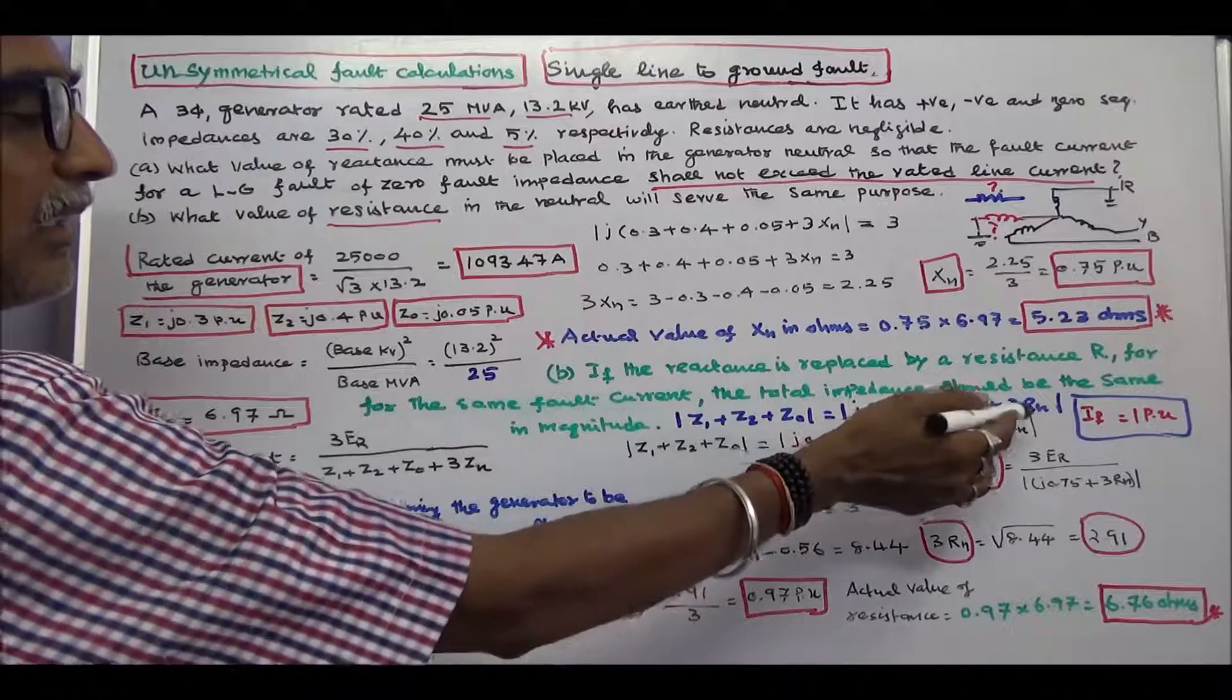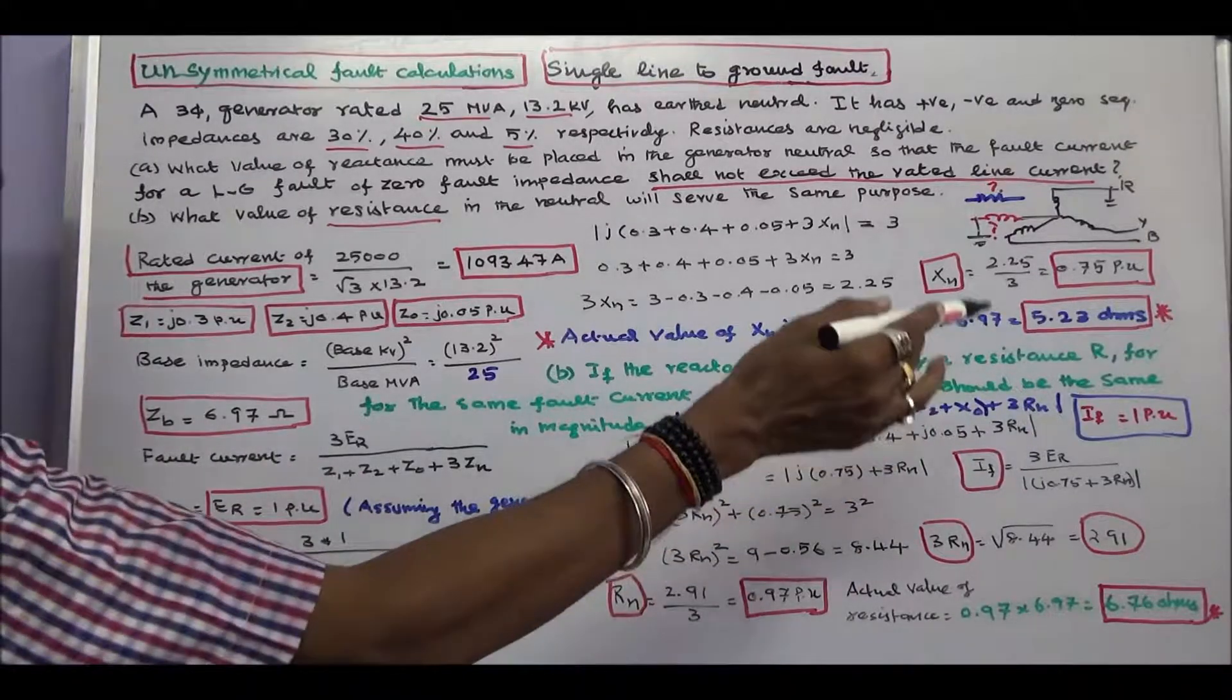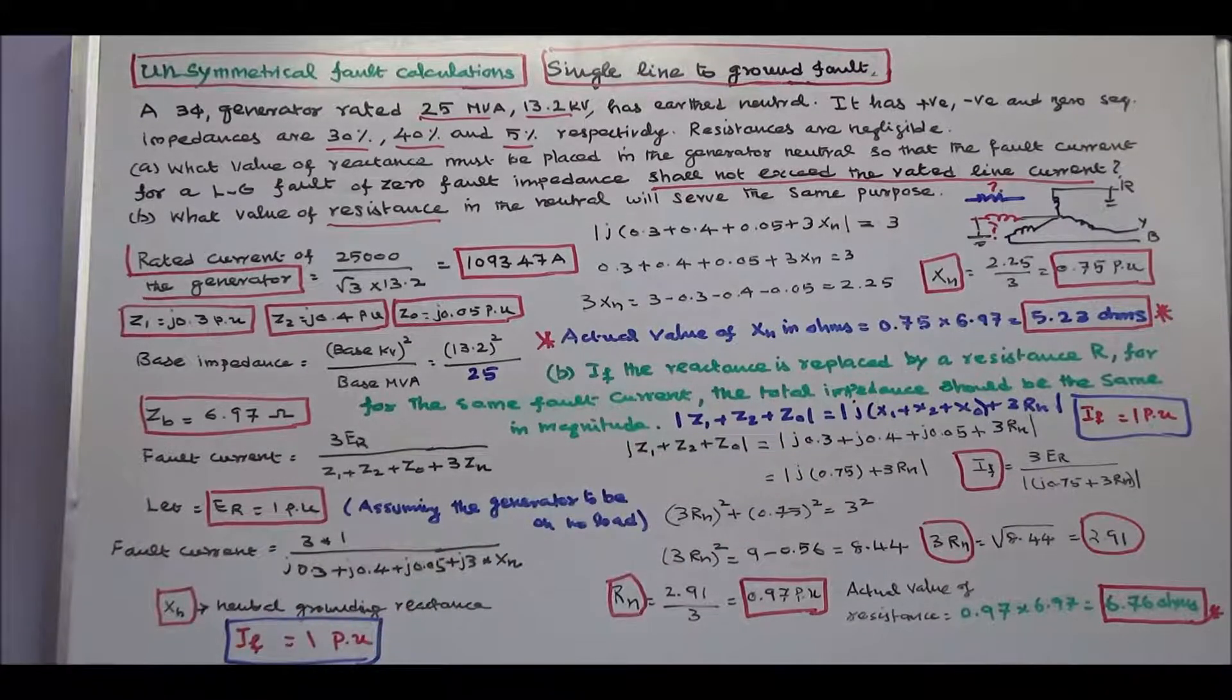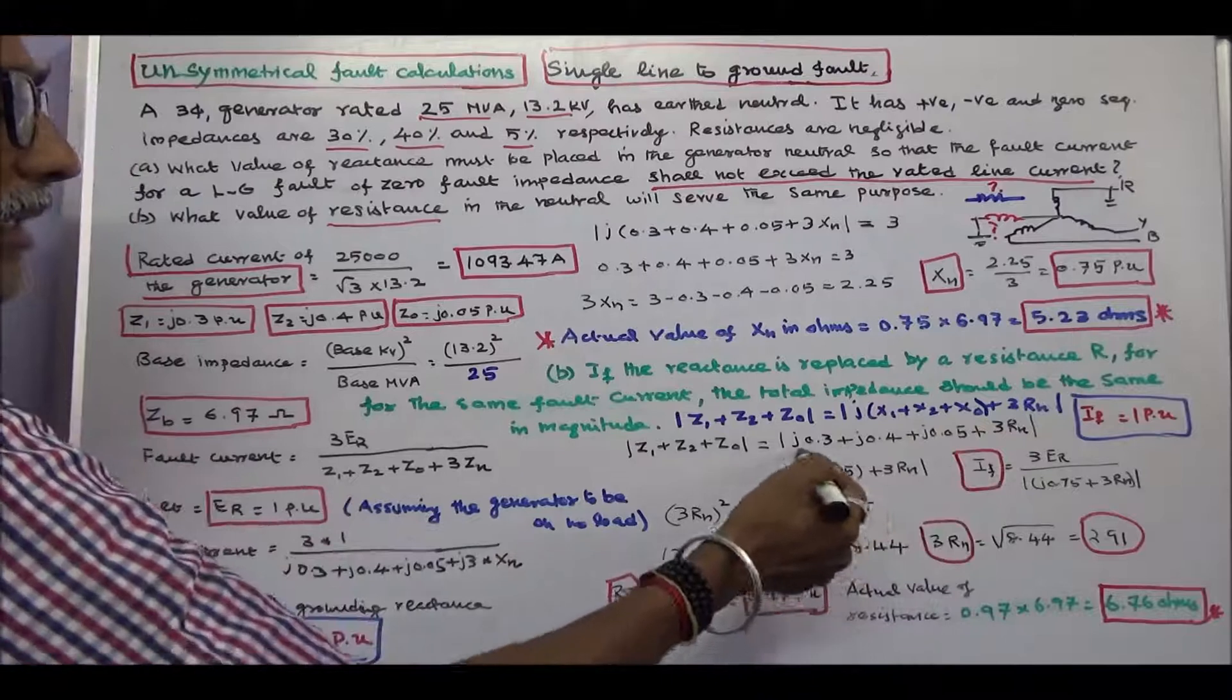This is a real term, 3 into Rn. Here, fault current is equal to 1 per unit we assume. Fault current IF is equal to 3 into ER divided by these three values, that is j0.75 plus 3 into Rn.